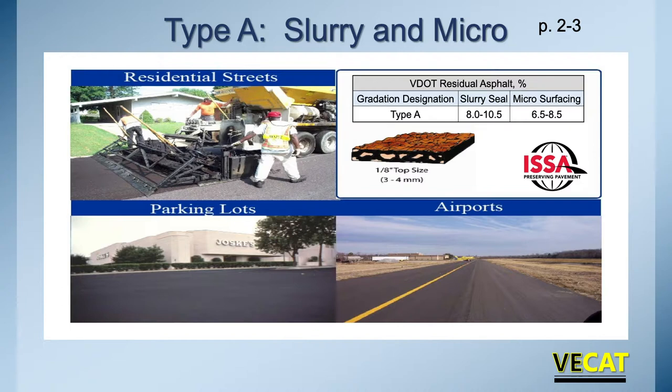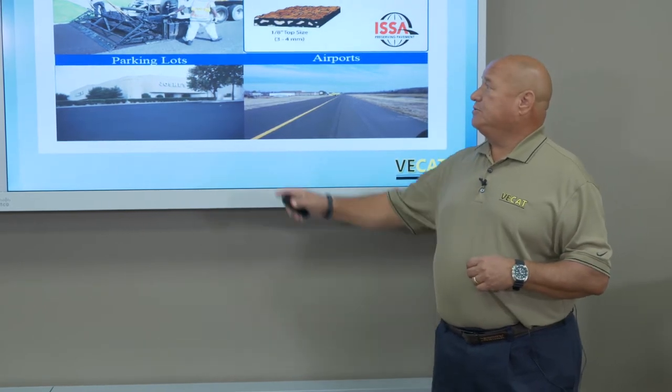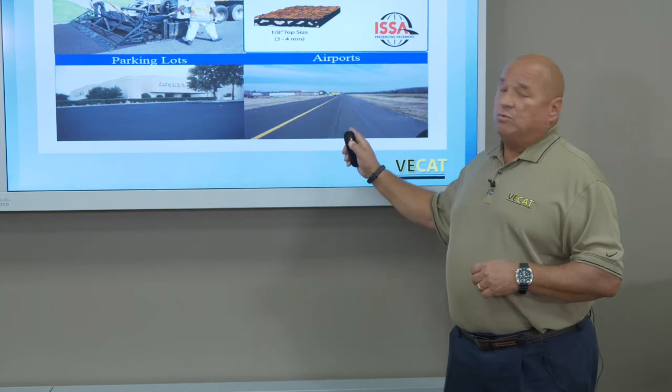There are three different types of slurry and micro. The first is Type A — very fine stone. In the slurry system, the Type A material is only one aggregate deep, and that's what designates the depth of that material. In a microsurfacing system, you can stack the stone so you can go a little bit deeper with it — the latex in the emulsion is what allows you to do that. Typical uses include residential streets, parking lots, runways, and taxiways. Because the material is so fine, it gets down into cracks and seals them up pretty well.